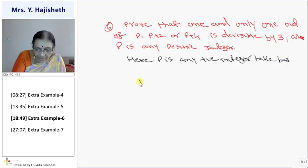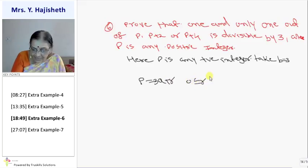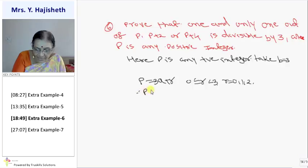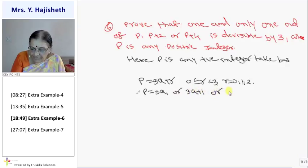By Euclid division lemma, I can write p as 3q plus r. Where r is between closed interval 0 to 3. Matlab r can take values 0, 1, 2. So my p can be written in the form 3q, or p can be of the form 3q plus 1, or p can be of the form 3q plus 2.